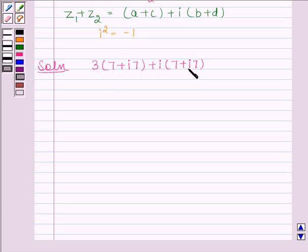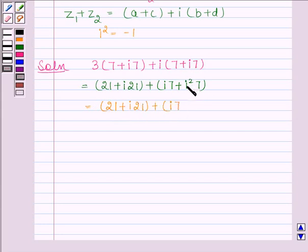Let's first solve these two brackets. 3×7 is 21 plus 3×i7 is i21 plus i×i7 is i²7. And this equals 21 + i21 + i7. Iota square is minus 1. Minus 1 times 7 is minus 7.